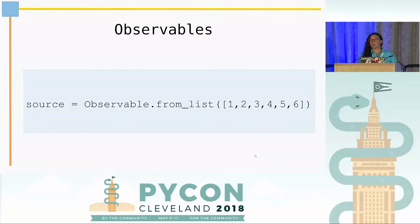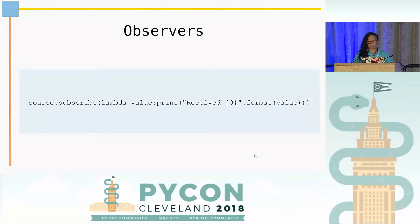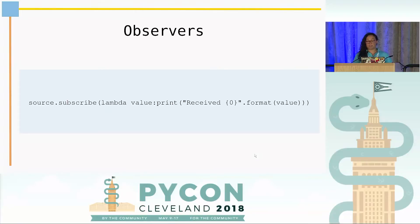This is an example of how easy it is to handle a list, but it can be not just a list — it can be anything, just data. We can take it to an observable. Something interesting is that nothing happens until the observer takes the data or asks for the data. So here we subscribe the data, and we can, in this case, just print it, or we can keep on handling the data that came.